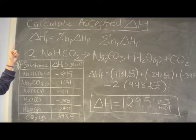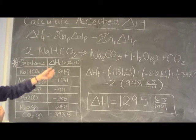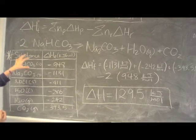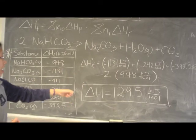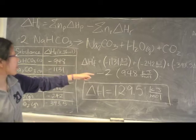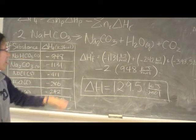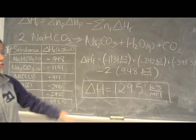Okay, now we have to calculate the accepted delta H, and we use the formula delta H is equal to the delta H of products minus the delta H of reactants. And we use these values and substitute them to the formula as shown below. Remember that since there's 2 moles of reactants, you have to multiply the heat of formation of NaHCO3 by 2. And then after calculation, you should get delta H is equal to 129.5 kilojoules per mole.